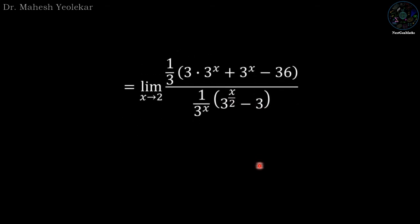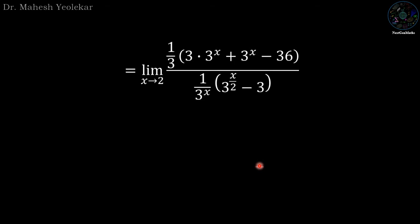Now if we simplify, then the denominator of the denominator will be the numerator, so 3^x is in the numerator and 3 is in the denominator. 3 plus 1 will be 4·3^x minus 36 divided by 3^(x/2) minus 3.